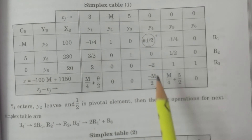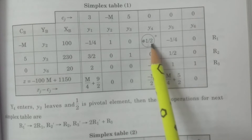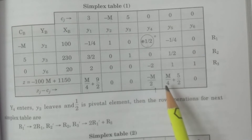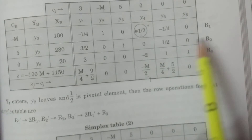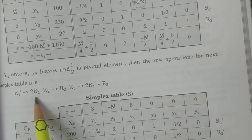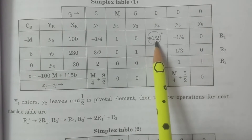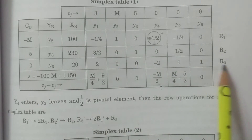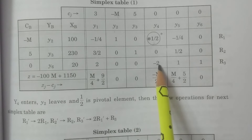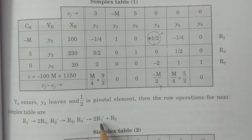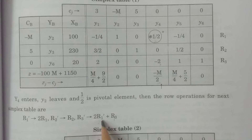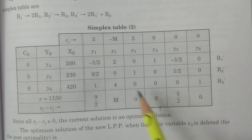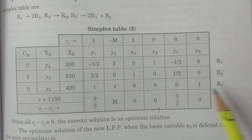We have to convert the pivotal element 1/2 to unity and make all other elements in that column zero, using row operations as usual simplex procedure. The row operations are: R1' = 2R1 (to make 1/2 become 1); R2' = R2 (already 0 in that column); R3' = 2R1' + R3. By doing these relevant row operations, we calculate R1', R2', R3' for simplex table 2.